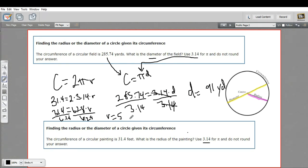And our units were feet in that case. So that is how to find the diameter or the radius of a circle when you're given the circumference.